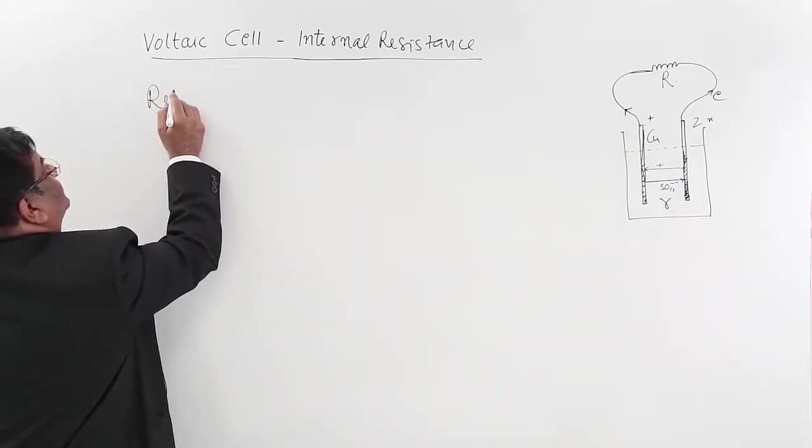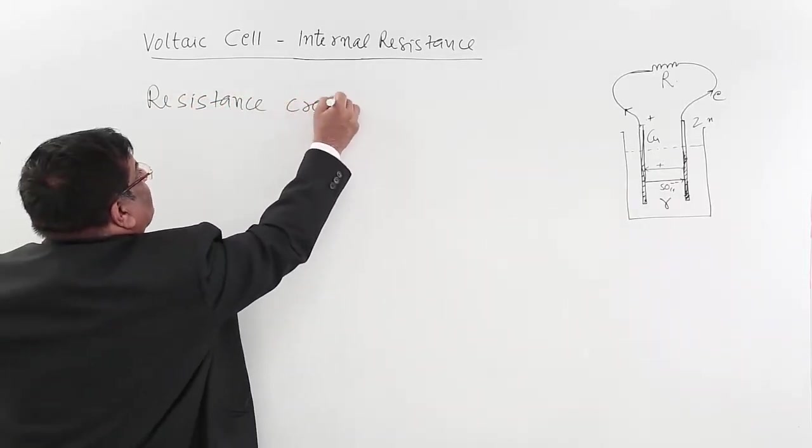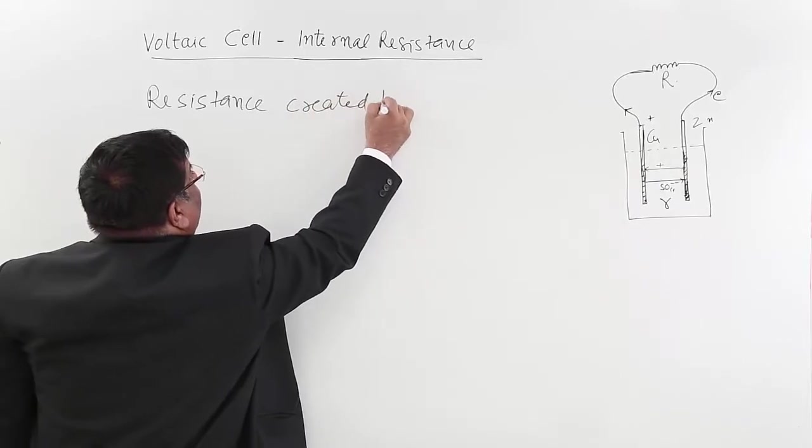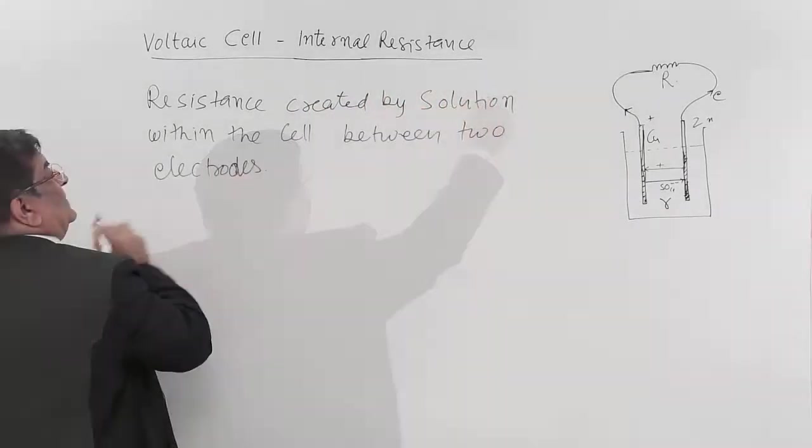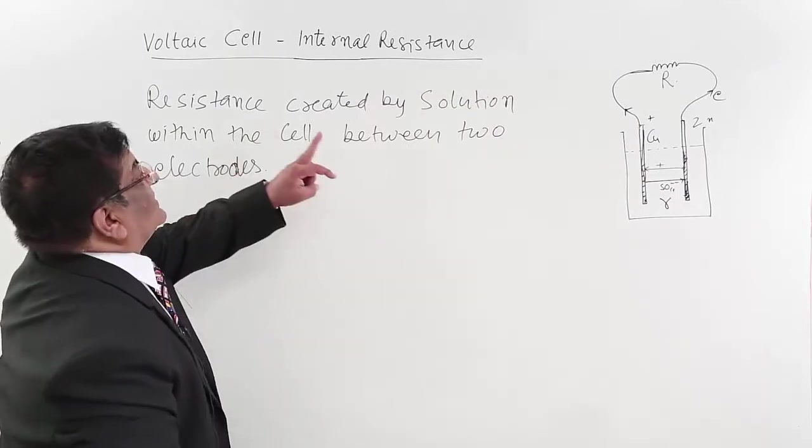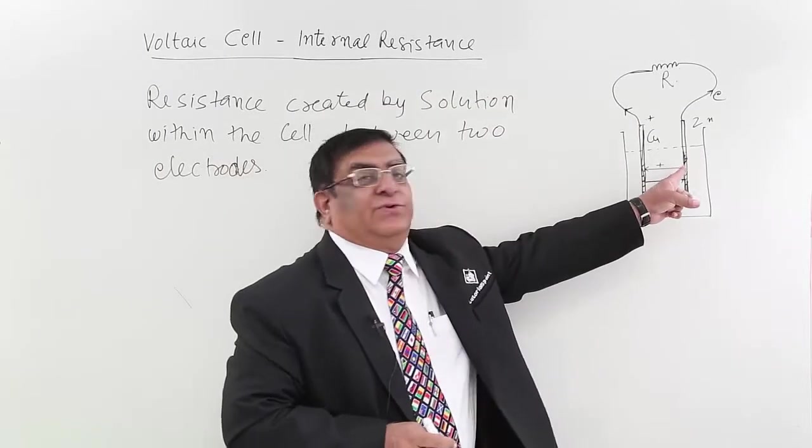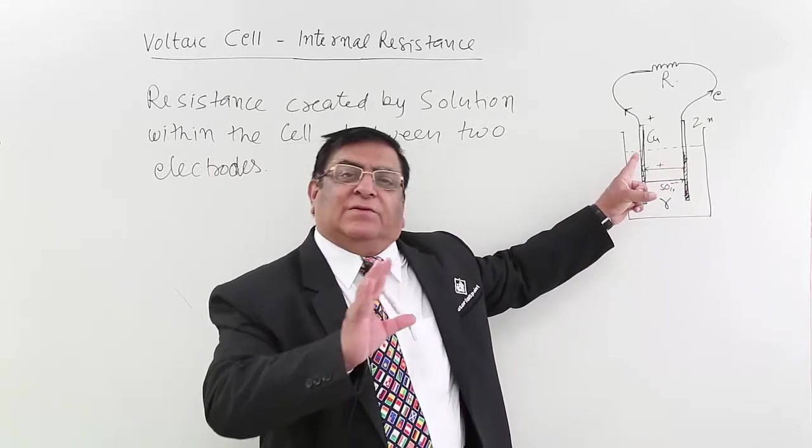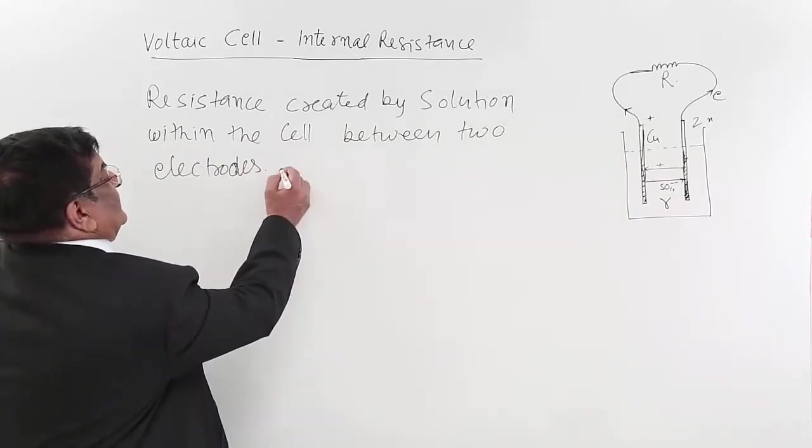What is internal resistance? Resistance created by solution within the cell between two electrodes. Resistance to the charges which are moving. This resistance is known as internal resistance.